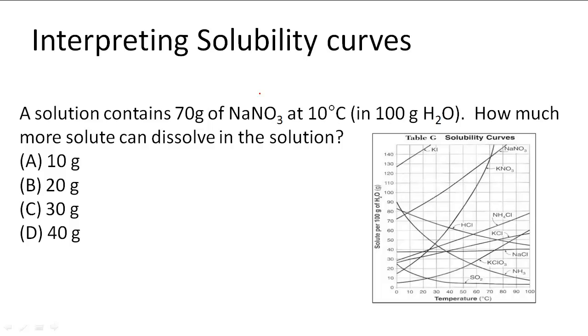Interpreting solubility curves. In this problem it says a solution contains 70 grams of NaNO3 at 10 degrees Celsius in 100 grams of H2O. How much more solute can dissolve in the solution?